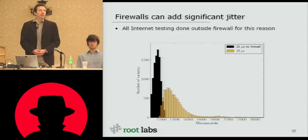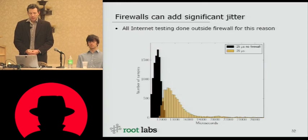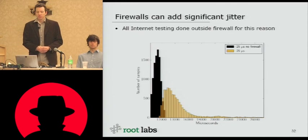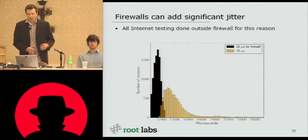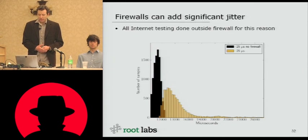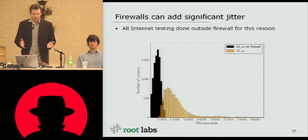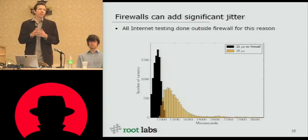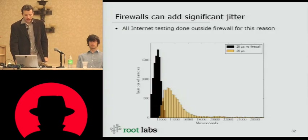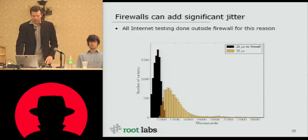Early on we had to reject a lot of samples. After debugging and testing, we found that our own firewall was screwing up our internet measurements. Here are two distributions: one was a measurement of a 25 microsecond delta without the firewall (in black), and the other was with the firewall. As you can see, the firewall adds not only a significant amount of delay — the peaks are shifted by a few milliseconds — but it also adds a lot of jitter. The distribution gets shorter and wider. So if you want to do any client attacks, do them from outside the firewall.